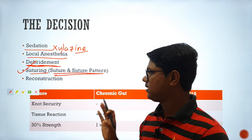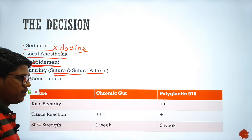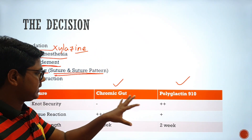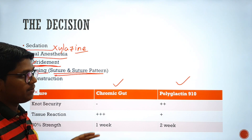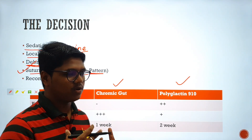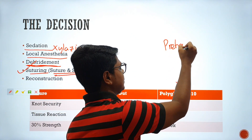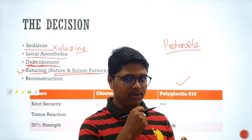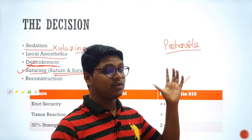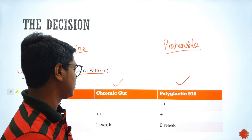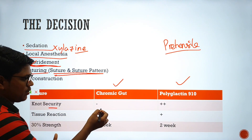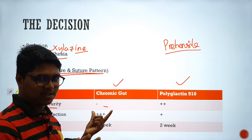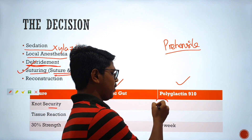The suturing involves choosing the suture and the suture pattern. I had availability of chromic catgut and polyglactin 910. Chromic catgut is a very cheap suture, affordable by many farmers. But this is a tongue surgery — the tongue is a prehensile organ in ruminants, used for grasping straws and grass, so it is continuously exposed to trauma. The knot security of chromic catgut is very minimum, and once it is wet — and the oral cavity is always wet due to saliva — the strength is gone.